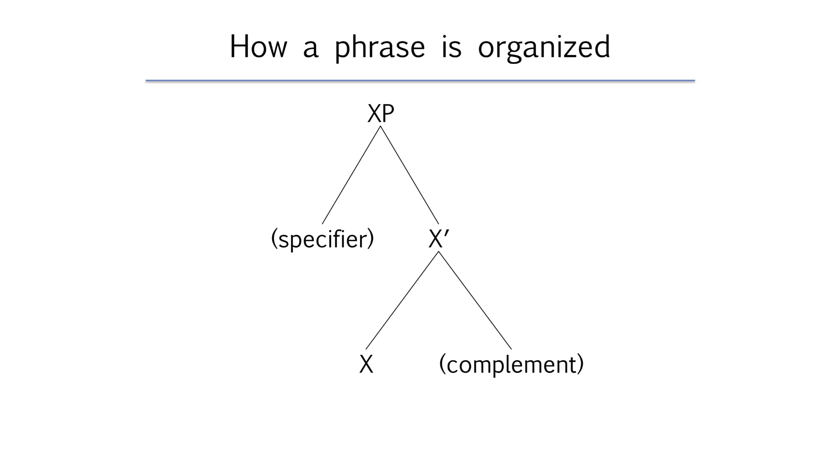According to X-bar theory every phrase has a head. The head is the terminal node of the phrase. It's the node that has no daughters. Whatever category the head is determines the category of the phrase. So if the head is a noun then our phrase is a noun phrase abbreviated NP. If the head is a verb V then the phrase is a verb phrase VP. And likewise if the head is a preposition then the phrase is a preposition phrase and adjective phrases have adjectives as their heads.